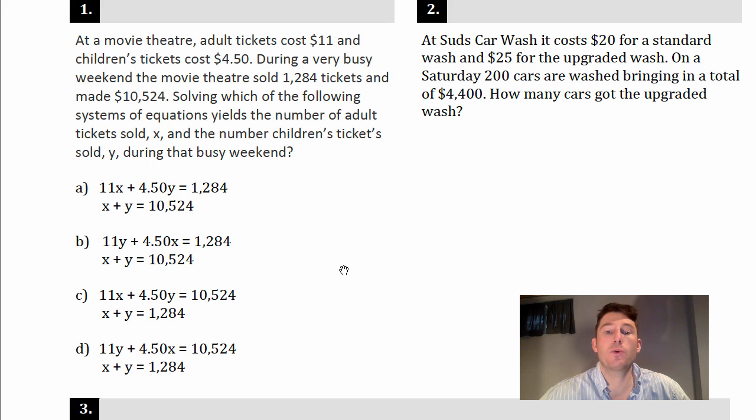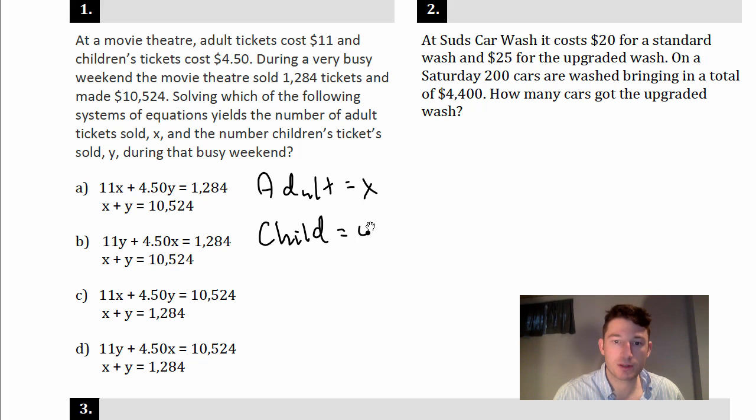Solving which of the following systems of equations yields the number of adult tickets sold, which is X, and the number of children's tickets sold, which is Y? All right, so first thing I'm going to do is identify my variables. So we've got adult equals X and child is Y.